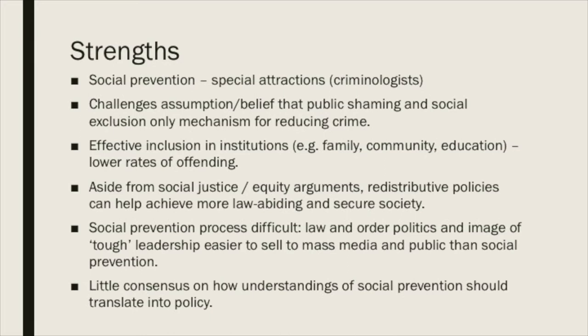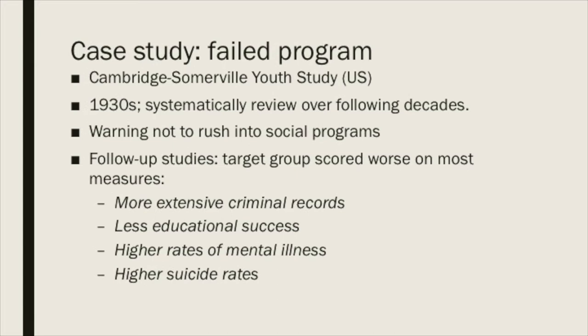Let's have a look at an example of where social prevention didn't work: the Cambridge-Somerville Youth Study from the US. This started in the 1930s and was systematically reviewed over the following decades. It serves as a warning not to rush into social programs. The follow-up studies showed that the target group actually scored worse on most measures: more extensive criminal records, less educational success, higher rates of mental illness, and higher suicide rates.